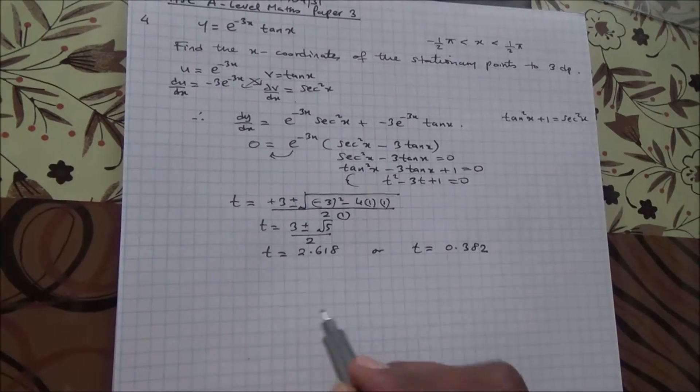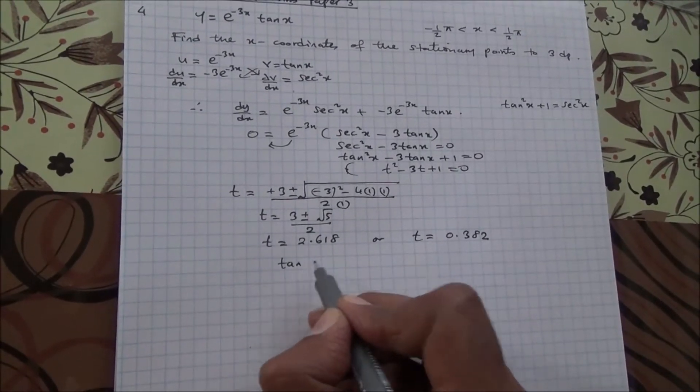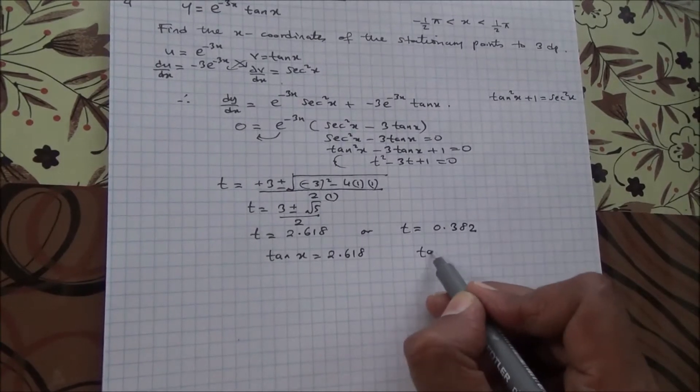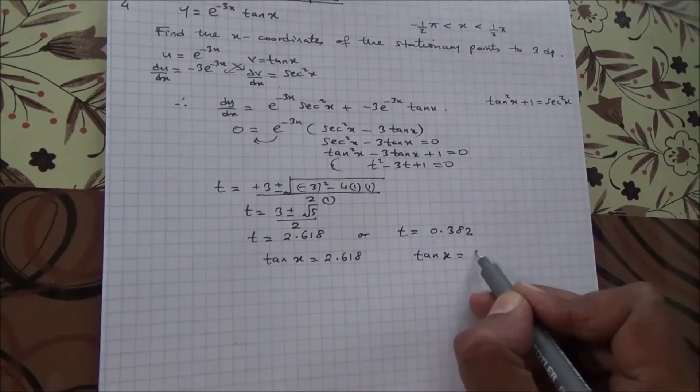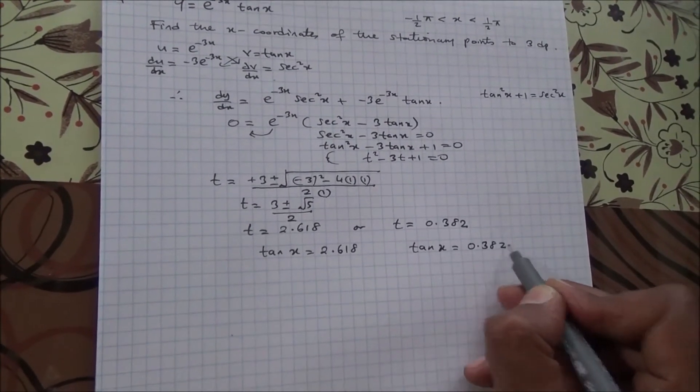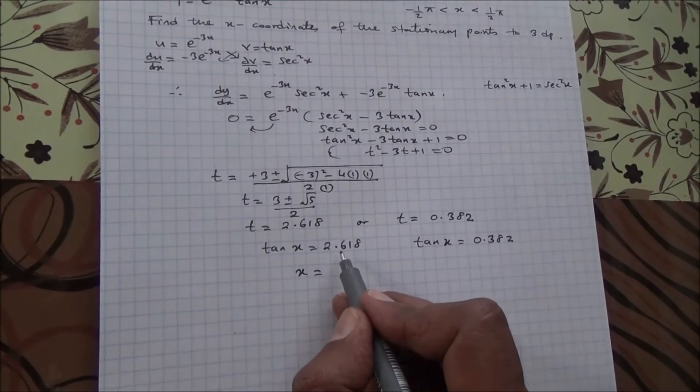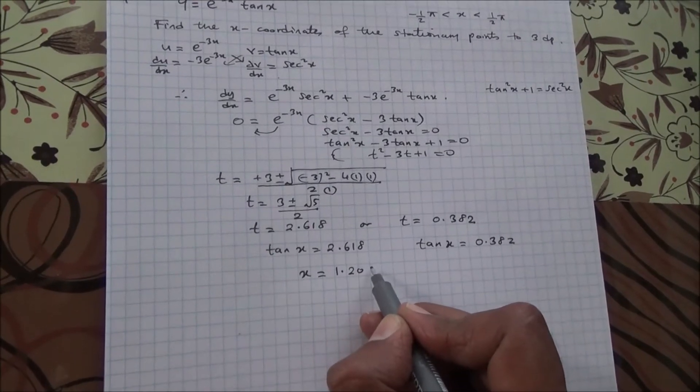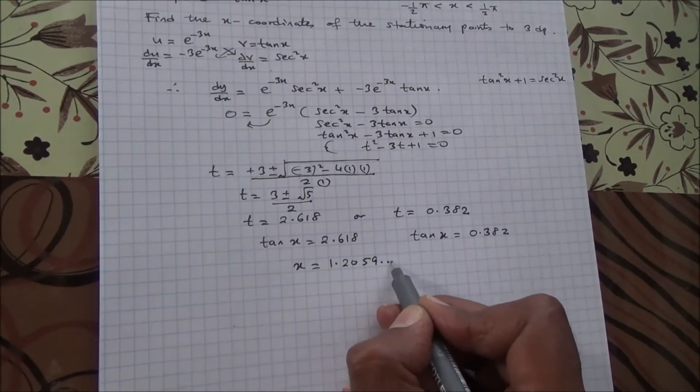Now, from here, we can say that tan of x is equal to 2.618, and tan of x is equal to 0.382. Check that out in your calculator, inverse tan of 2.618, it's going to give you 1.2059, and so on.